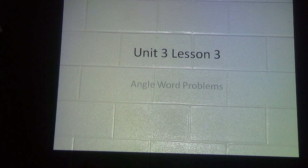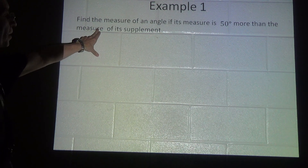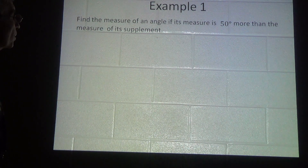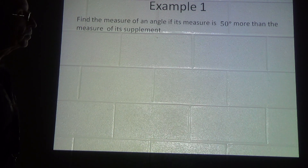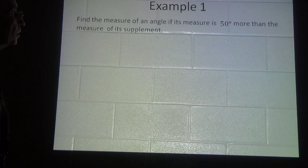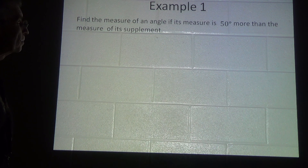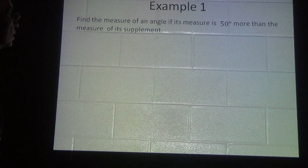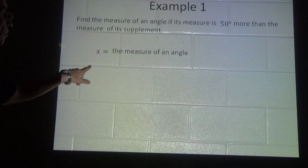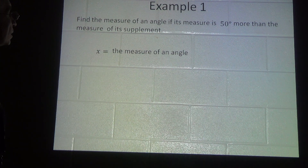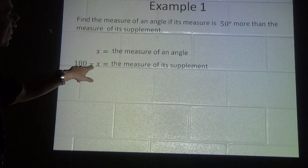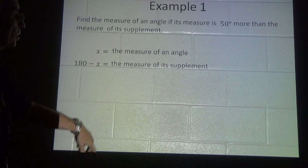Example 1: Find the measure of an angle if its measure is 50 degrees more than the measure of its supplement. A supplement means that the angle adds up to 180 degrees with the other angle. So we're going to use algebraic representation. We define x to be the measure of the angle, and 180 minus x is equal to the measure of the supplement.